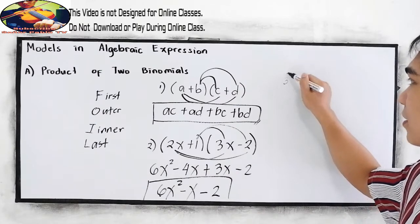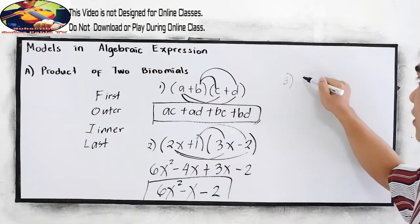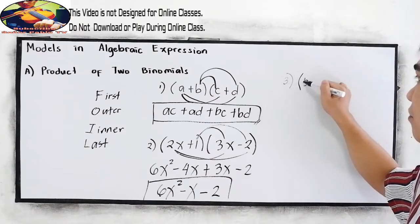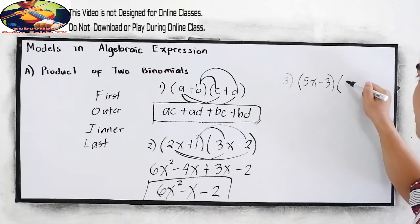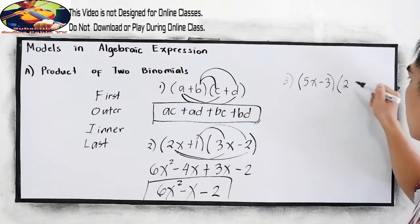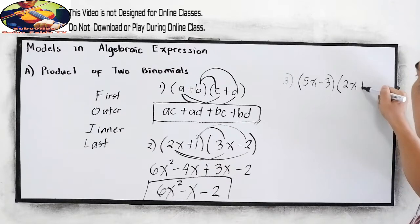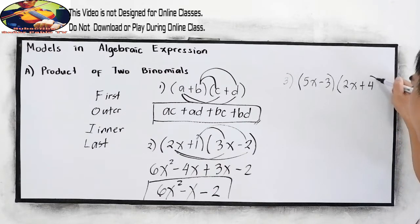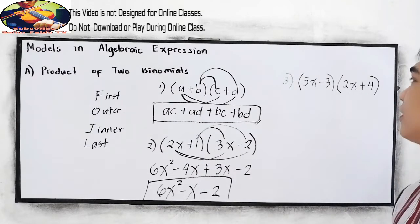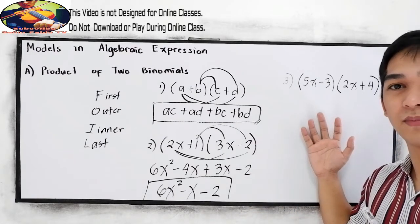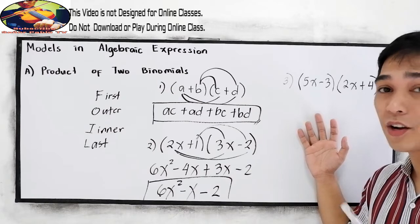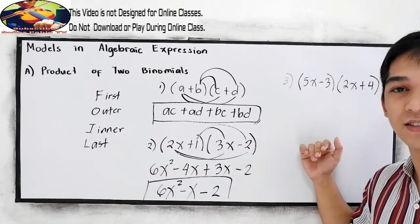Now your turn. Can you answer number three? We have (5x − 3) times (2x + 4). If you want to try, pause the video, then after answering resume watching to check your answers.